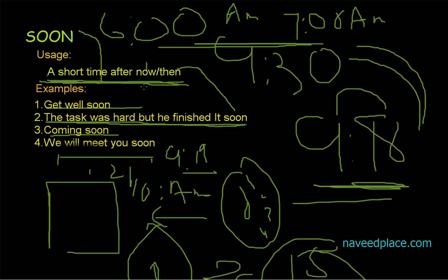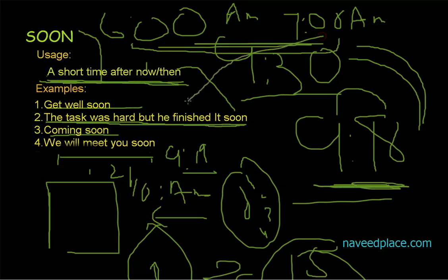So to summarize: right now it is 9:18 — that is the present — and after a short time, 9:30, that is SOON for present. And for past, it was 6 a.m. and he completed his work at 7 a.m. — that is SOON for past. This was a lecture on SOON. I hope you have understood. For more videos, lectures, and exercises, come to my website www.naveithplace.com.